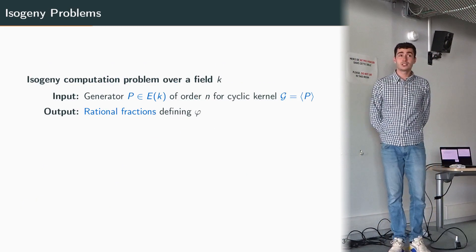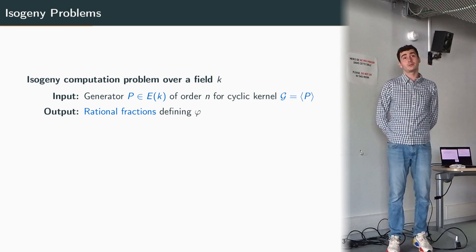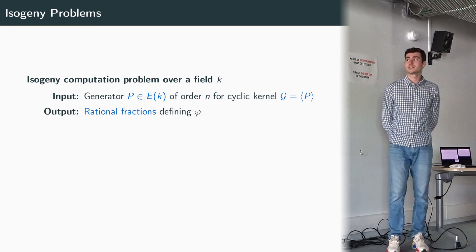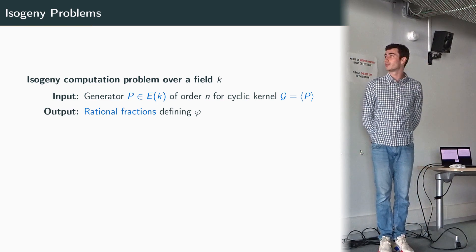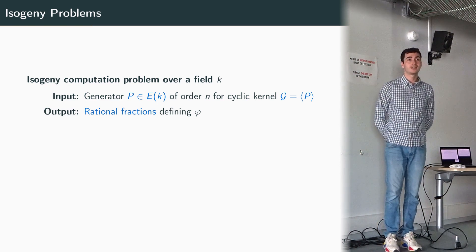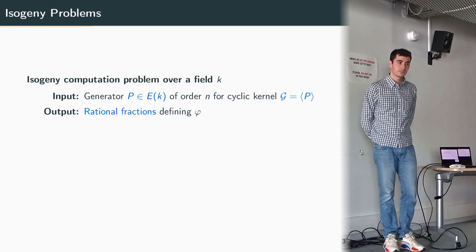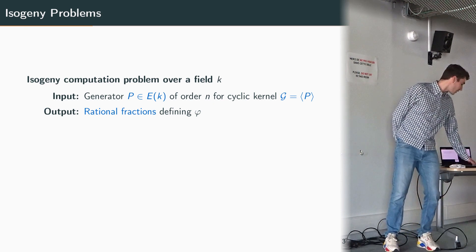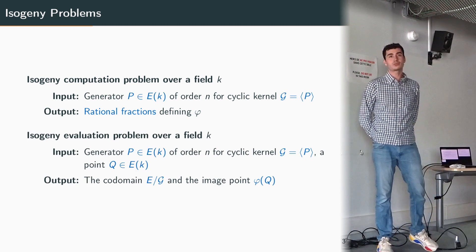So now that we have our definitions what kind of problem can we tackle? Well the first one, maybe the most basic one, is the isogeny computation problem. So given a point P which is a generator of a group of size n, we want to compute the rational fractions defining the related isogeny.